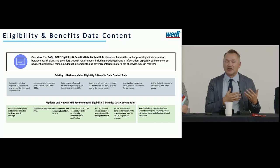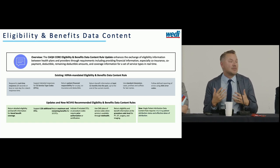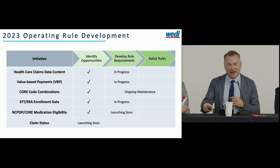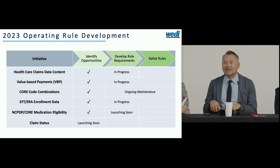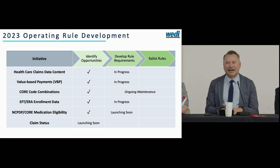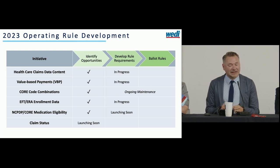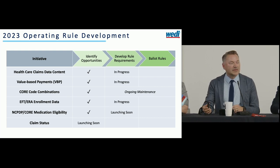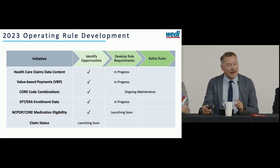These are really key components that help providers get the data when they need it. I want to highlight some of the work we've done in 2023 — new rules we're publishing or getting set to publish later this year into the first quarter. We're looking at healthcare claims data content, value-based payment, EFT/ERA enrollment, and CORE code combinations related to CARGs and RARGs. These are all topics salient to this group as we look at not only EDI but the entire revenue cycle. We'll also talk about recent work with NCPDP on the medication eligibility project.